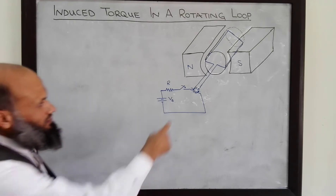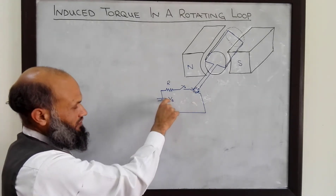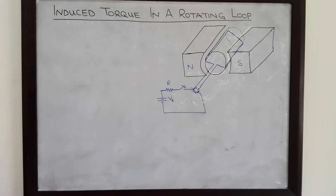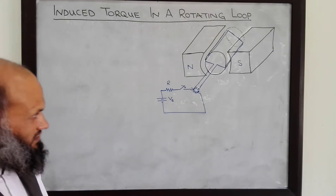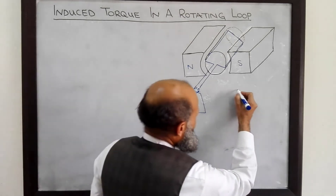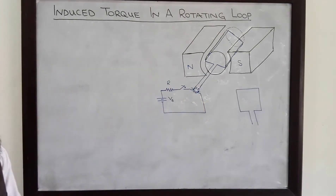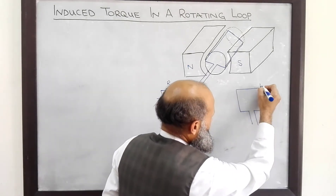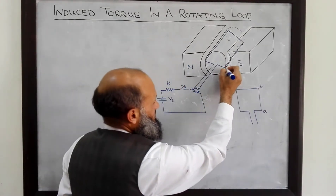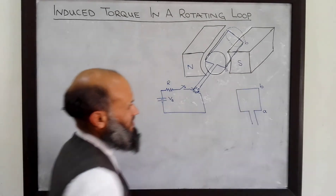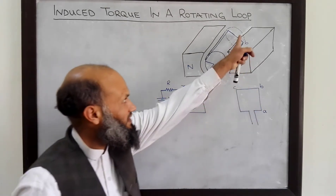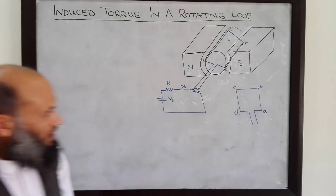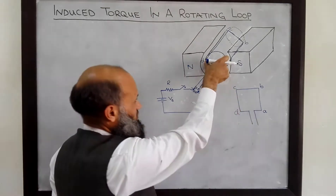This rectangular coil is connected to a voltage source through a resistor and a switch. When this switch is closed, current will start flowing in the coil. This coil is a rectangular coil of this shape. Let's also name the sides of this coil: side AB which is over here, side BC which is at the back end, side CD which is this conductor, and side DA which is at the front.